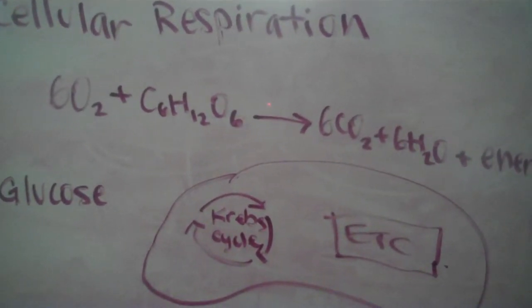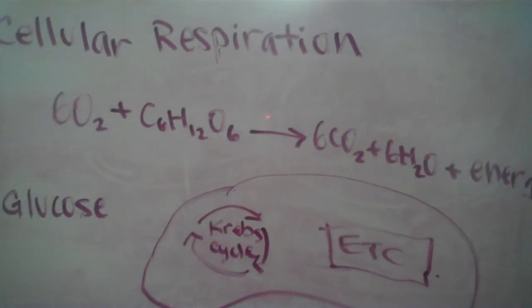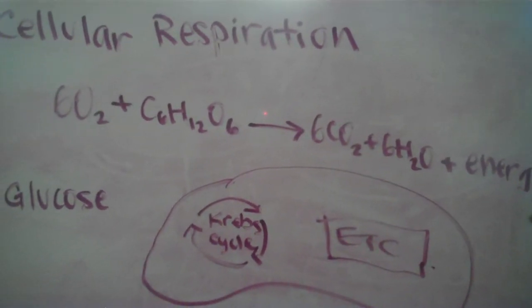This is named glycolysis, and it results in a net gain of two ATP, NADH, and two pyruvic acid molecules.